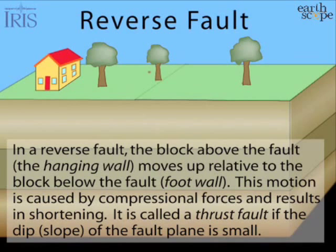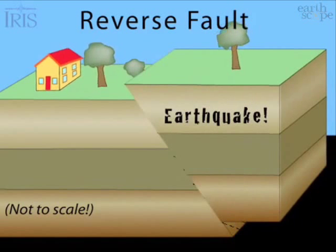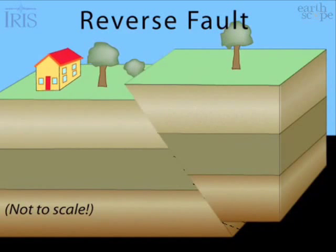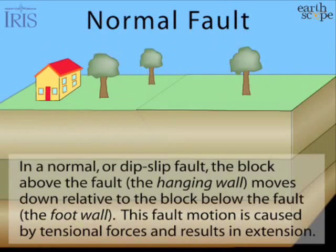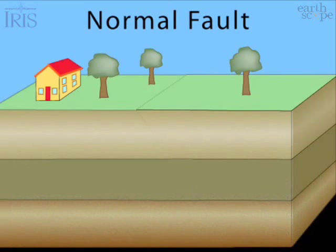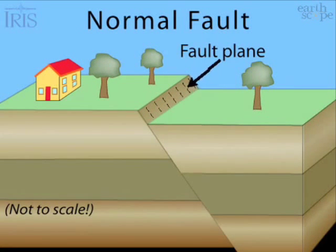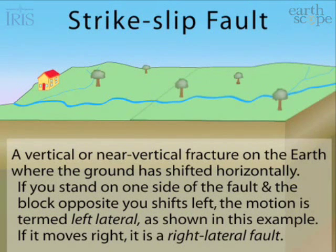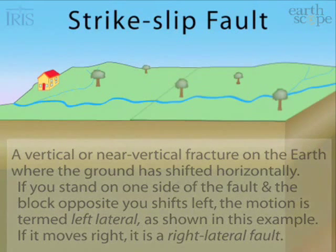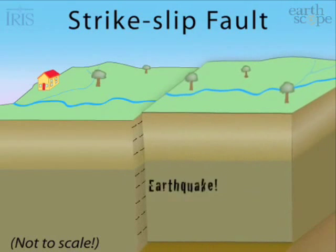First is a reverse fault, where rocks are pushed together one over the other. A normal fault is where rocks spread out, one pulling away from the other. And third is the strike-slip, where rocks bend or break sideways, each sliding past each other.